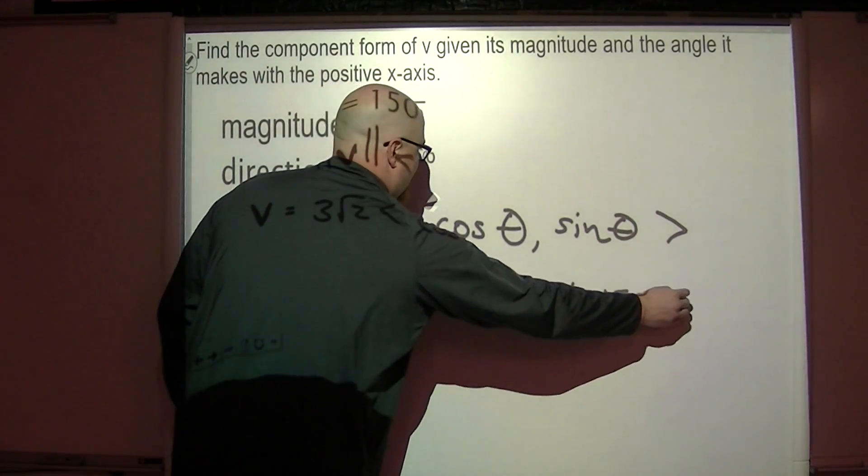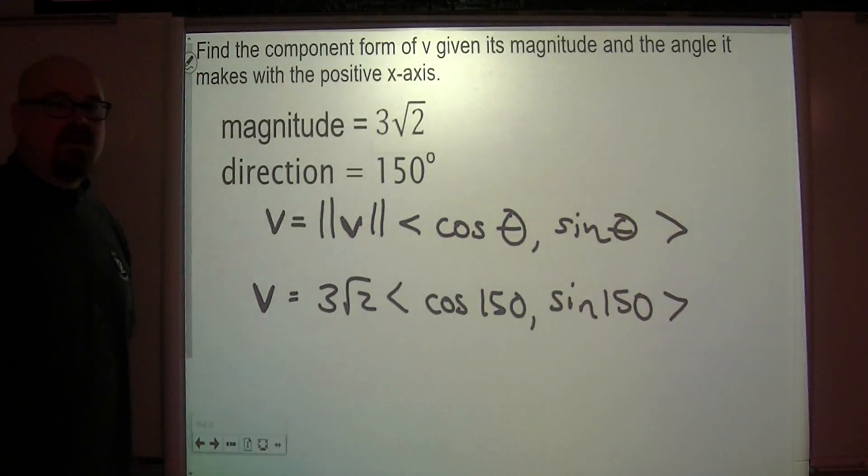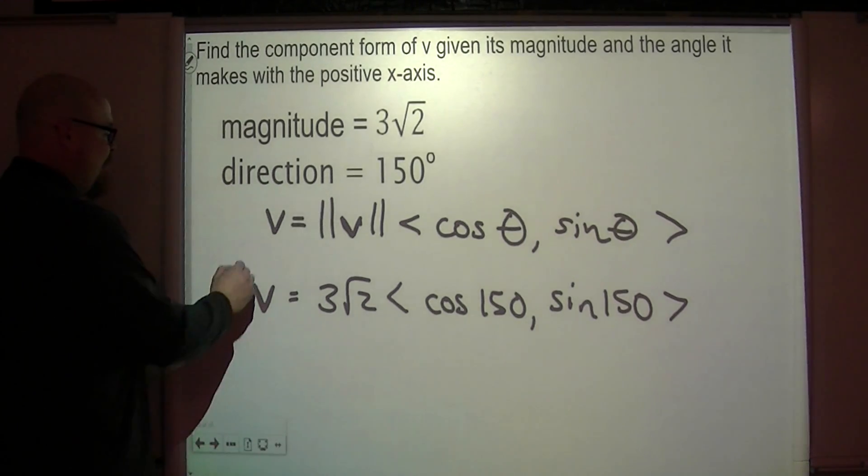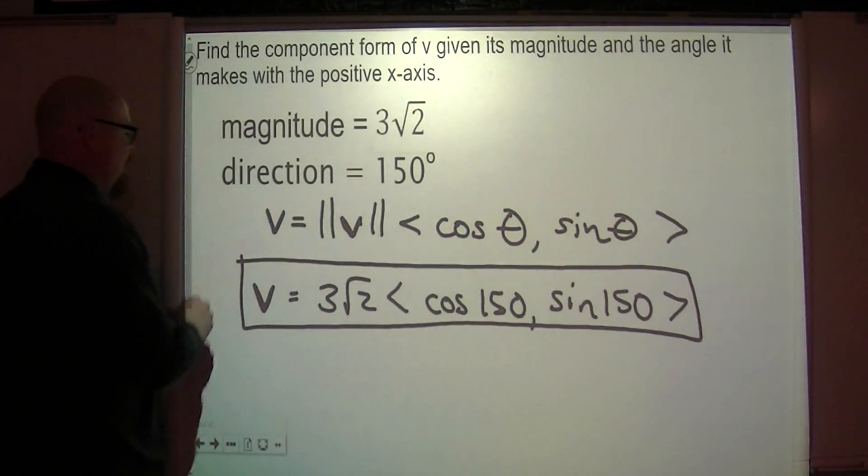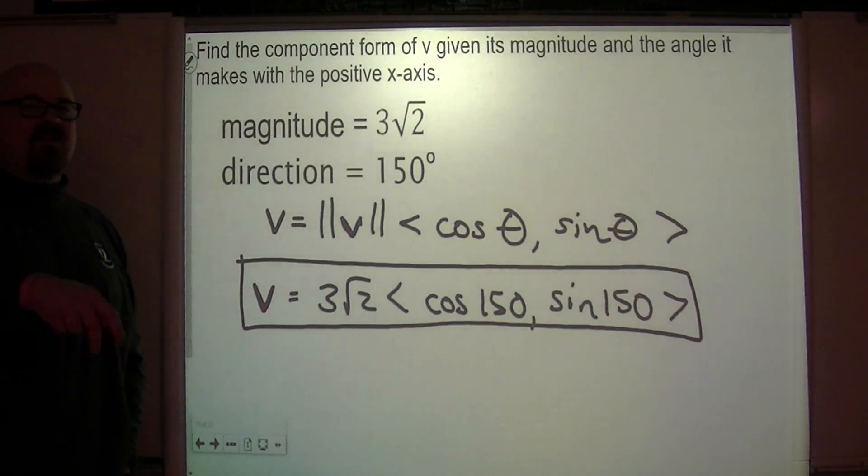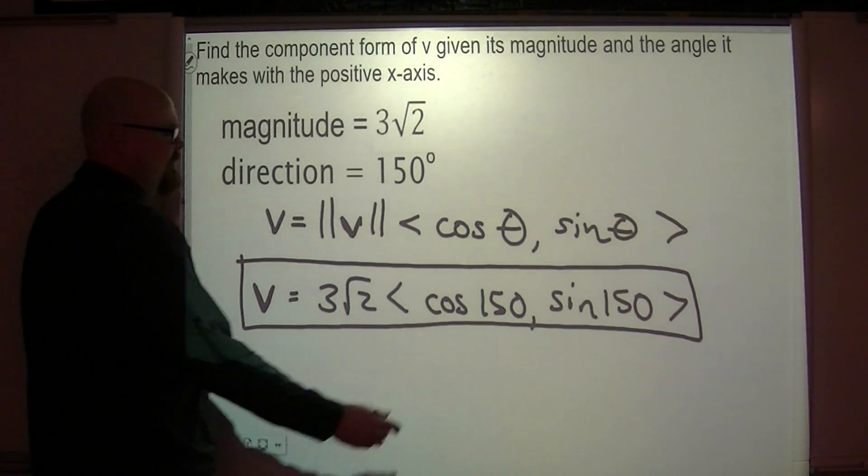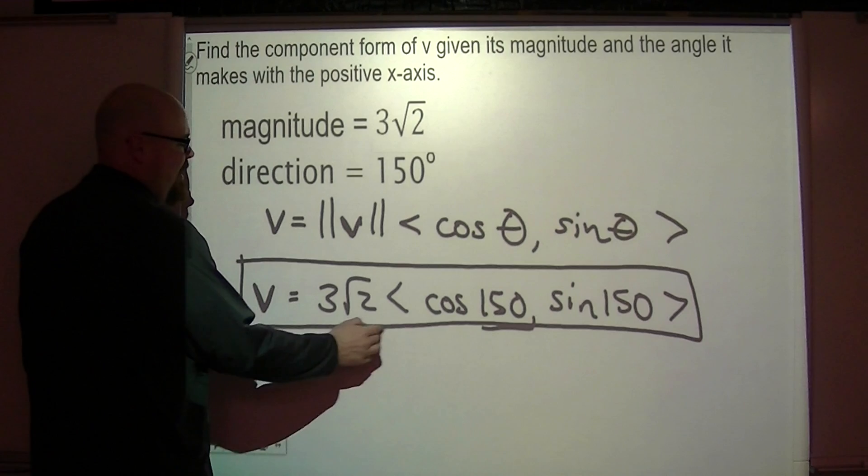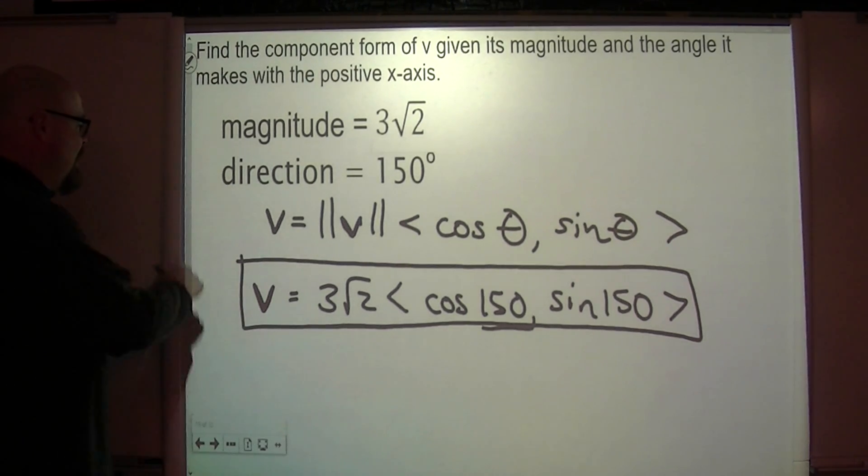This is good enough. This does represent that vector. We want to keep it like this for now, because it tells us the direction this is headed in, and it tells us how long the vector is. All right, so we could actually draw a picture based on this.